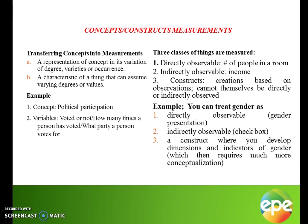How do we measure concepts and constructs — how do we transfer concepts into measurements? An example of a concept is political participation. The variables we look at include: voted or not, how many times a person has voted, and what party a person votes for. In measurement, there are three classes: those that are directly observable (e.g., gender), those we cannot observe directly (e.g., income), and constructs where you develop a dimension and an indicator.